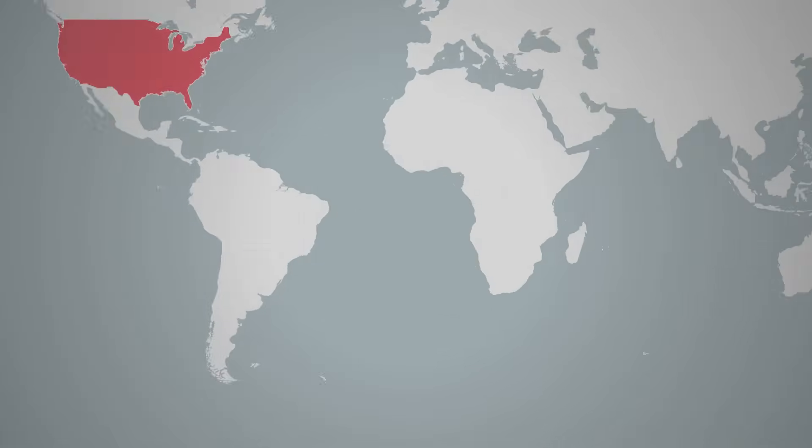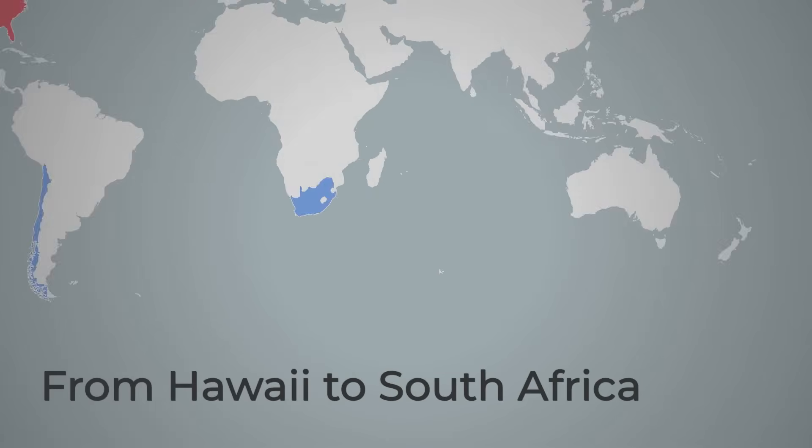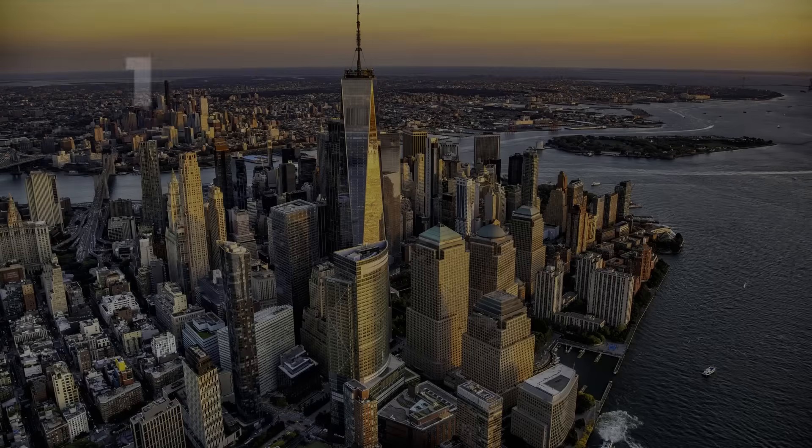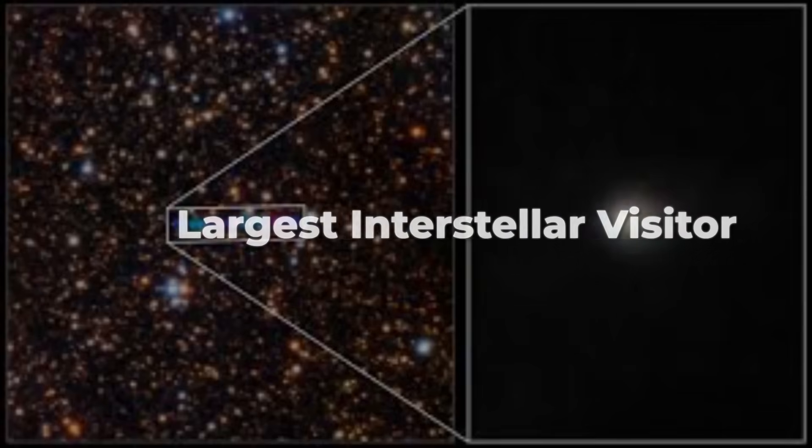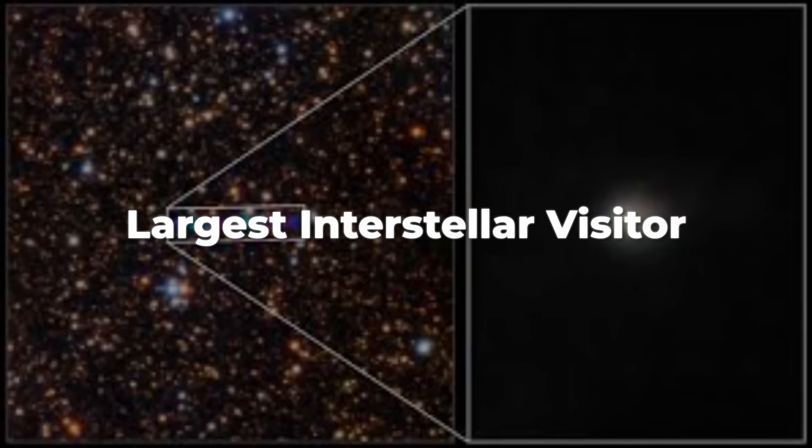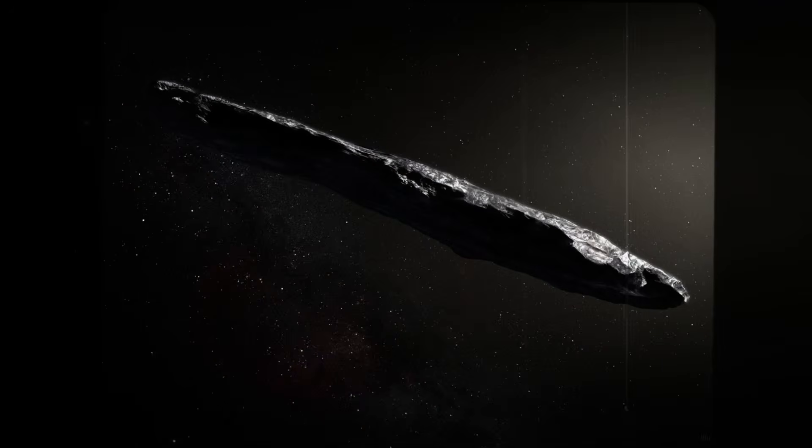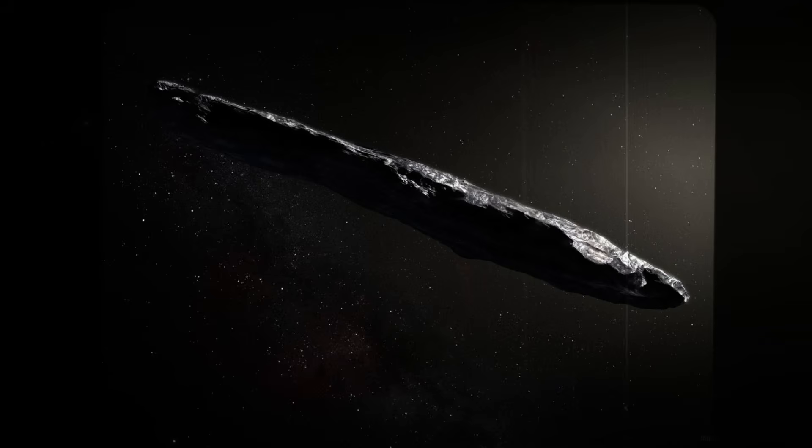The Minor Planet Center received the alert before sunrise. By noon, observatories from Hawaii to South Africa had joined the verification effort. Early calculations suggested a body up to 10 kilometers wide, about the size of Manhattan, making it not only the third interstellar object ever spotted but by far the largest. For context, 1i-Oumuamua in 2017 was barely a few hundred meters across, and 2i-Borisov a little over a kilometer.